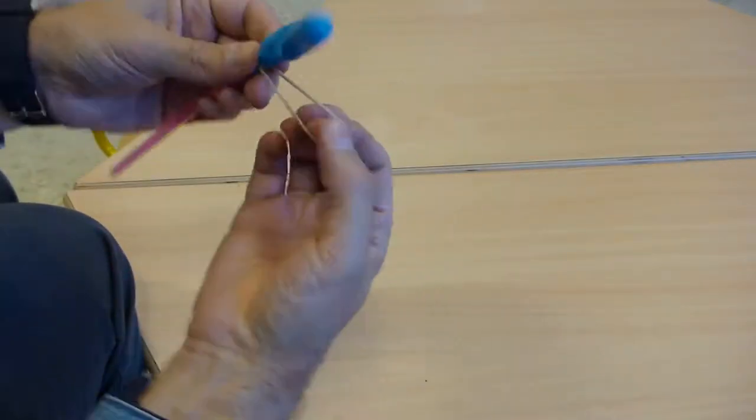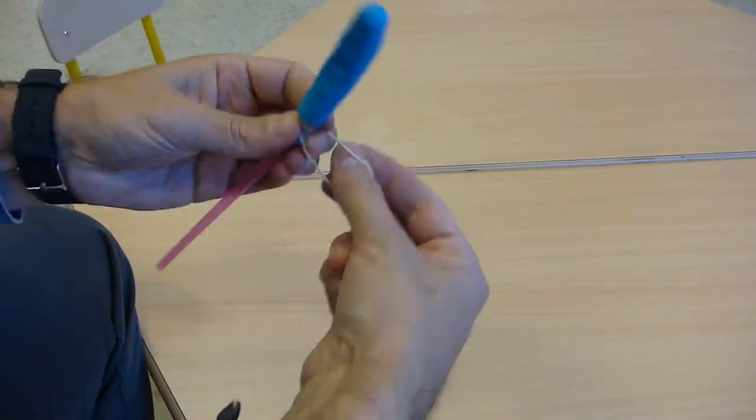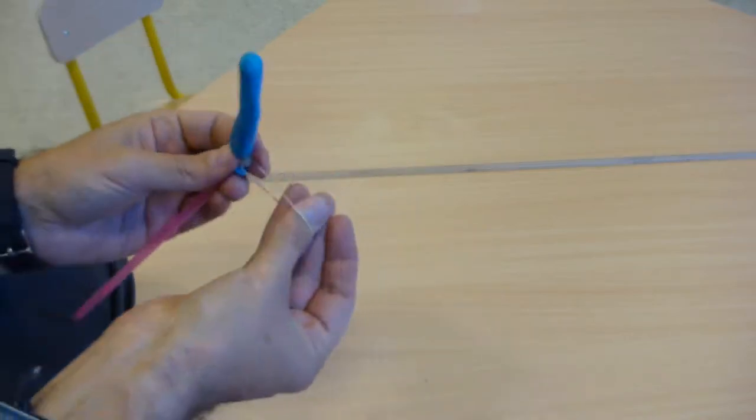Then take the rubber band and wrap it around the neck of the balloon in order to attach it to the straw.